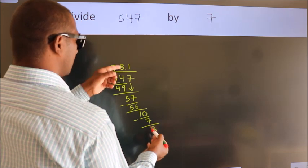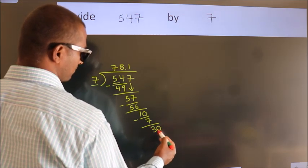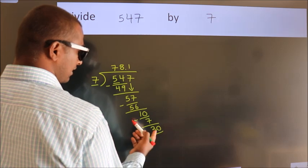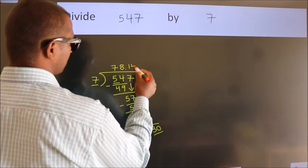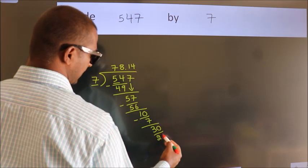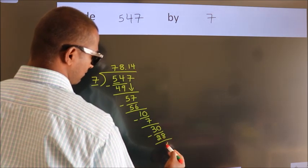After this, we already have the decimal. So directly take 0. So 30. A number close to 30 in the 7 table is 7 times 4 is 28. Now we subtract, we get 2.